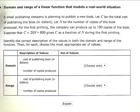Domain and Range of a Linear Function that Models a Real-World Situation. A small publishing company is planning to publish a new book. Let C be the total cost of publishing the book in dollars, and N be the number of copies of the book produced.